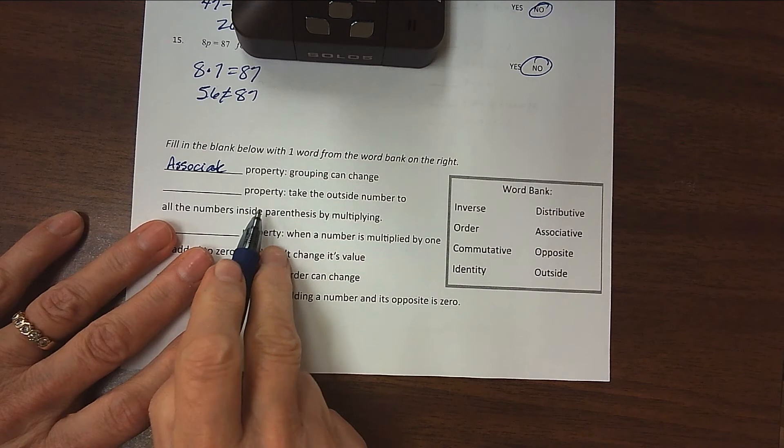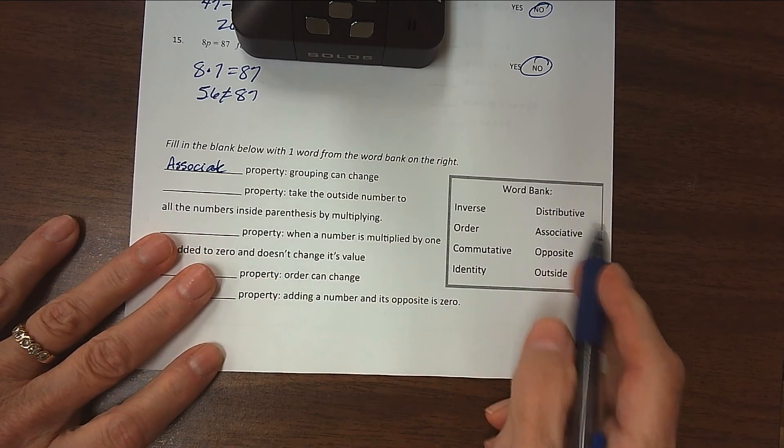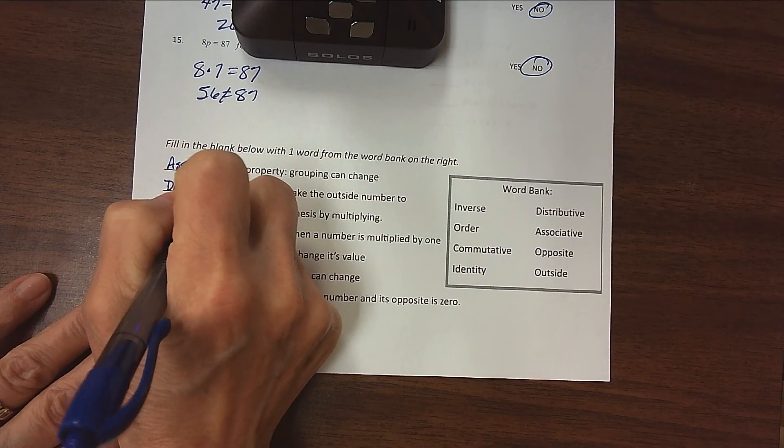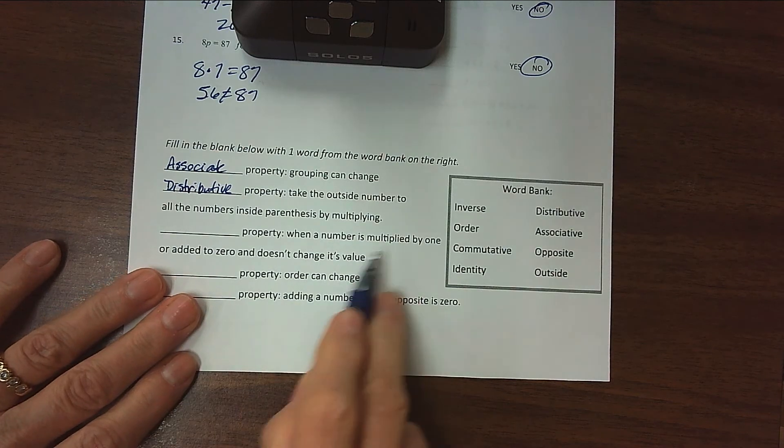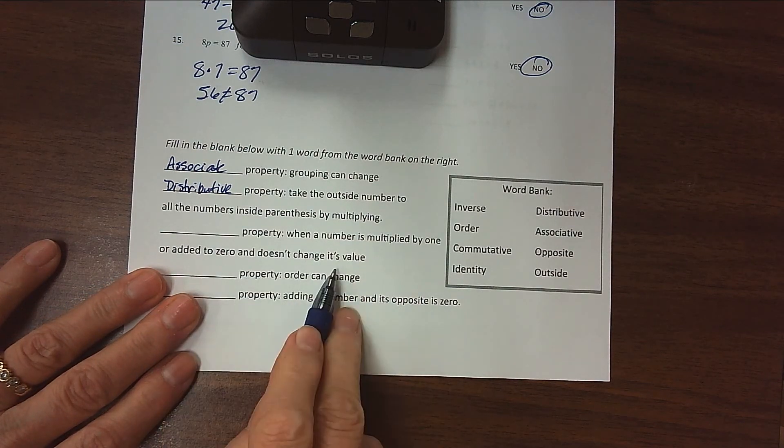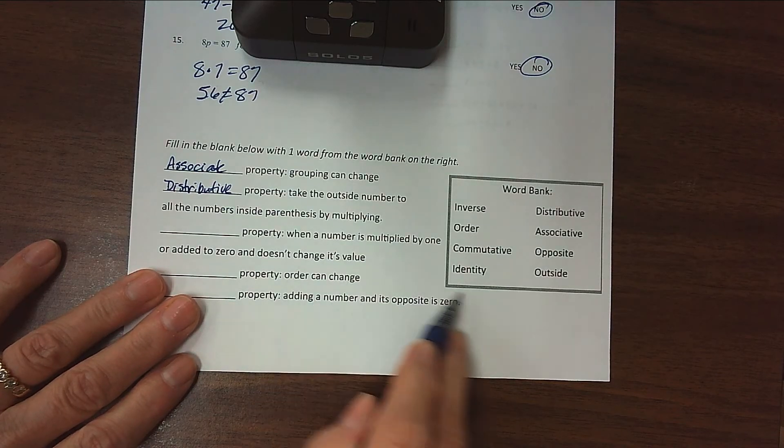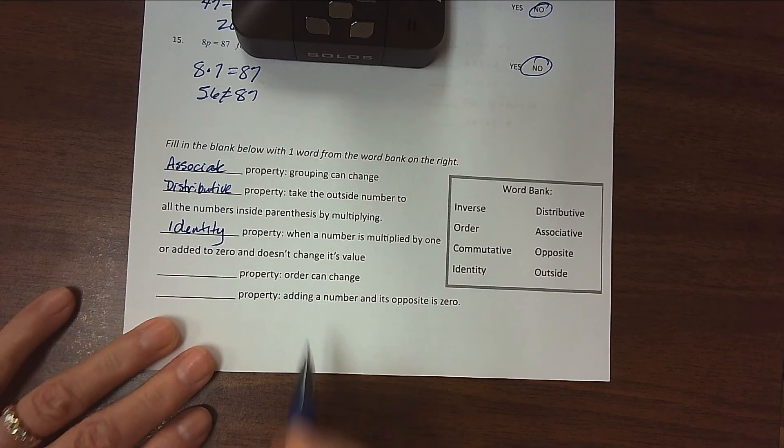The property that takes the outside number and multiplies it by the inside number is the distributive property. The property when a number is multiplied by 1 or added to 0 and doesn't change its value, in other words you get what you started with, is the identity property. We have the same identity after the problem's over as we did before we started it.